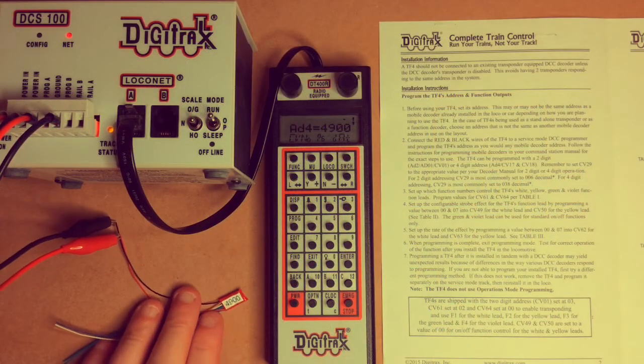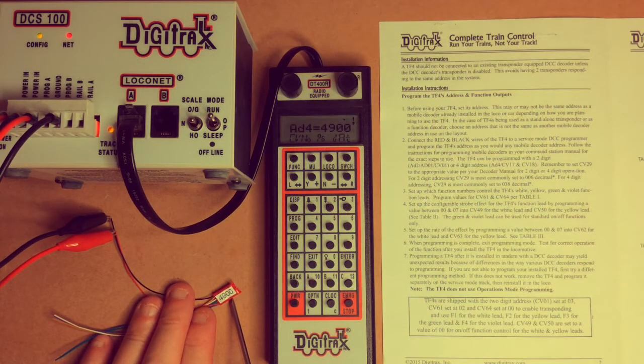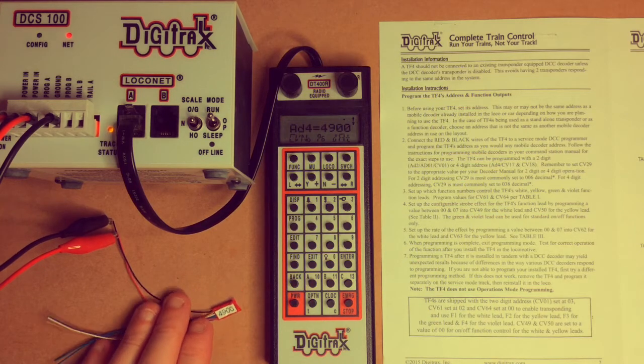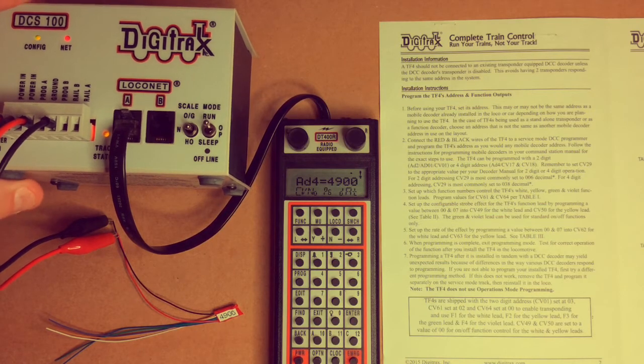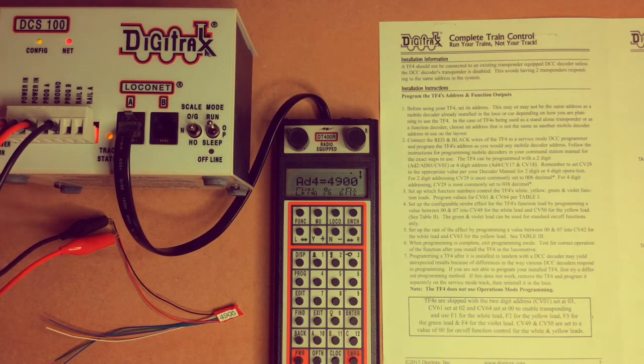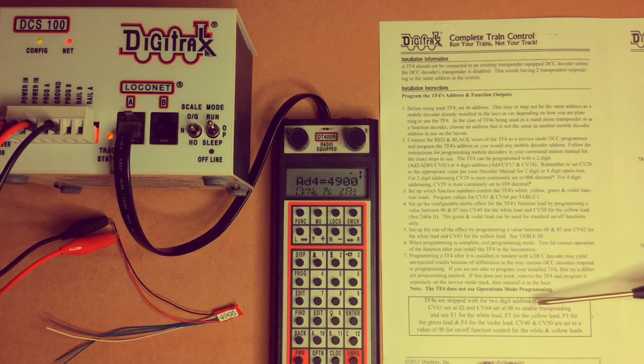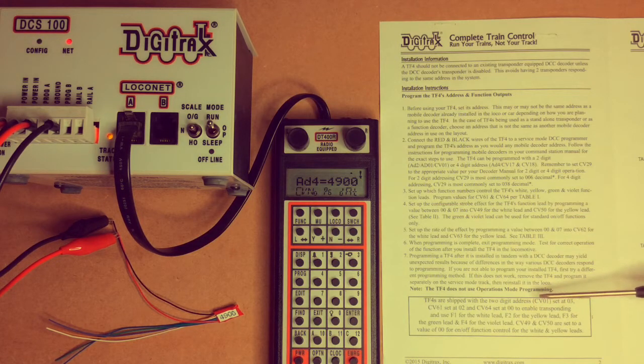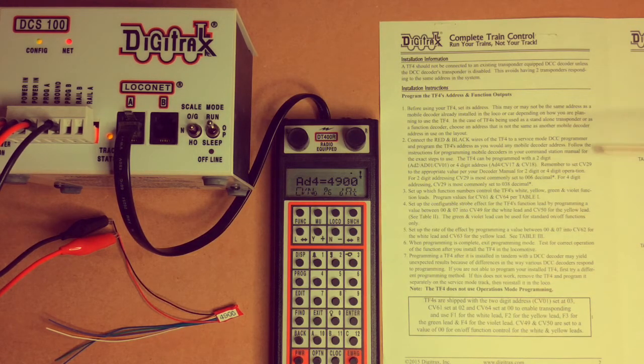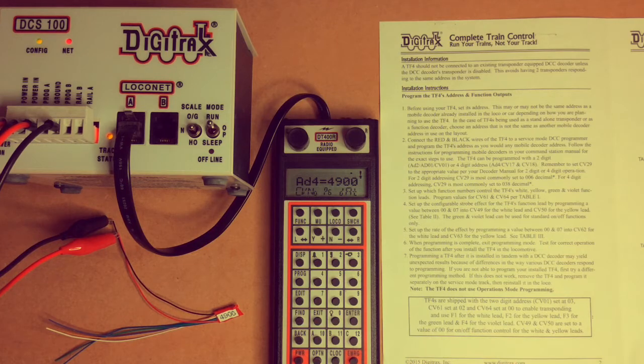We've labeled our decoder with its new address, 4900. The next step is to look at the functions on this decoder and what do we want them set at. Now do follow through the instructions here. These decoders are best installed where there is not already another Digitrax transponding decoder. I use these when I'm using something like a LokSound decoder, or particularly for a piece of rolling stock that I want to know where it might be on the layout at any one time.